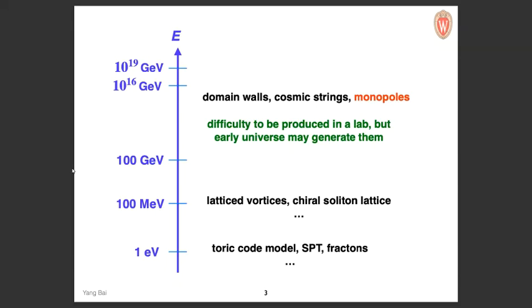There may be some interesting consequences: for example, some ways to form interesting dark matter states or gravitational waves that can be detected. So I've started thinking about how domain walls change early universe physics. But in this talk I will concentrate on monopoles. These high-scale topological states are difficult to produce at a lab, so we have to think about astrophysical objects or the early universe.